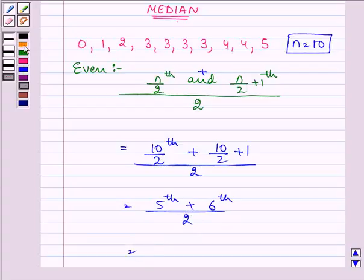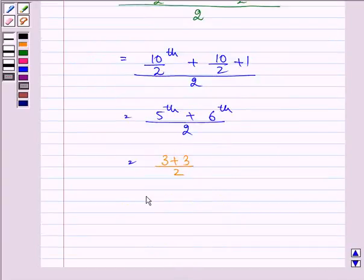On substituting, we have the 5th observation as 1, 2, 3, 4, 5 and the 6th also as 3. So 3 plus 3 divided by 2, which gives us 6 by 2, that is 3 itself.